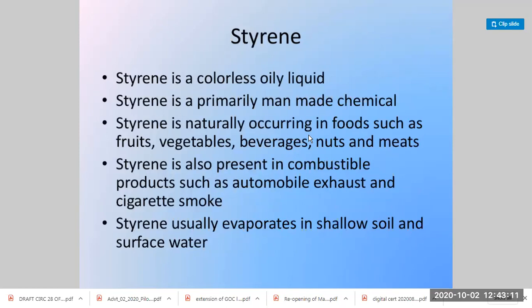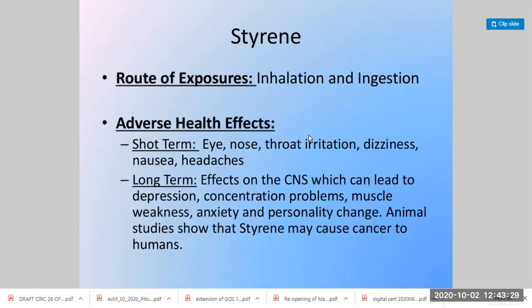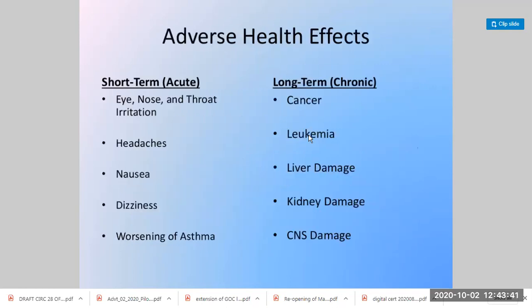Styrene is also a volatile organic compound and primarily a man-made chemical, but it also occurs in foods like fruits, vegetables, and beverages, and in combustible products such as automobile exhaust and cigarette smoke. It usually evaporates in shallow soil. Short-term effects include eye, nose, and throat irritation, dizziness, weakness, anxiety, and personality change.